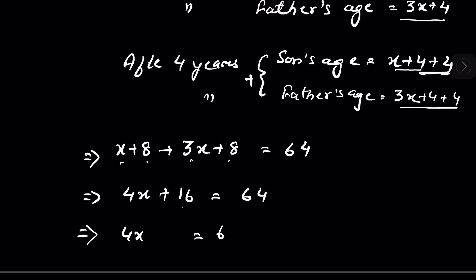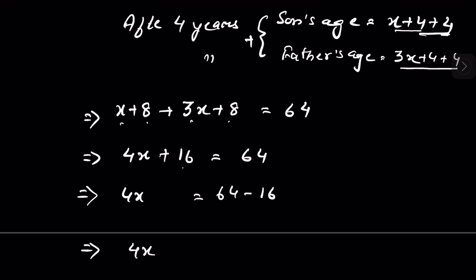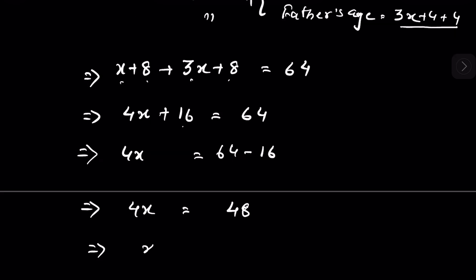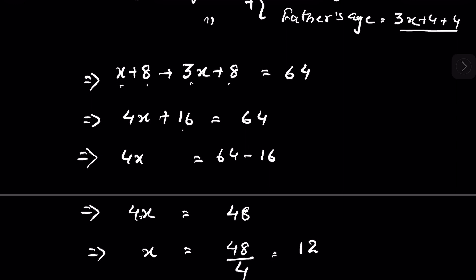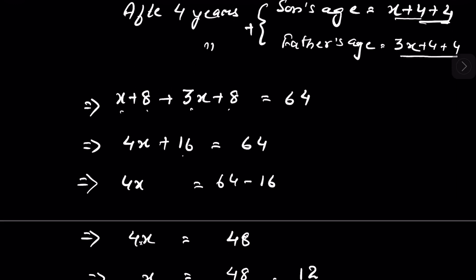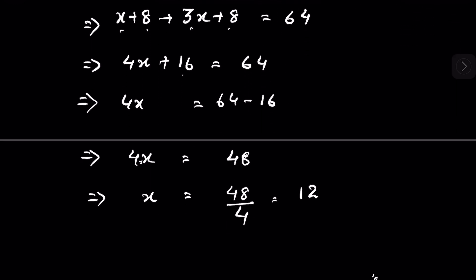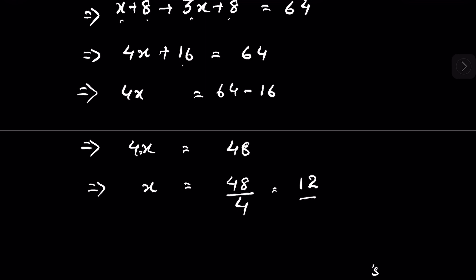So four x equals 64 minus 16, which is 48. Then x equals 48 divided by 4, which is equal to 12. So x equals 12.